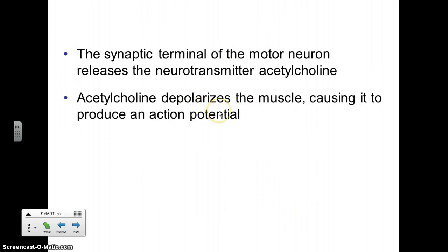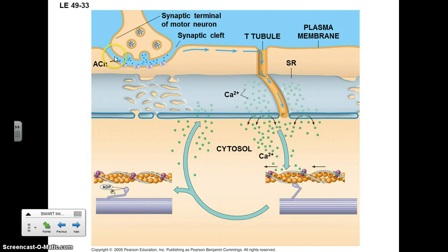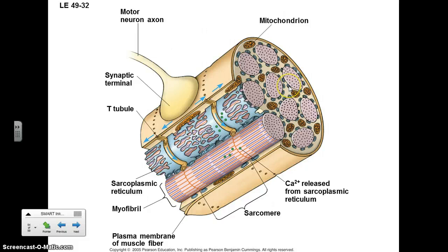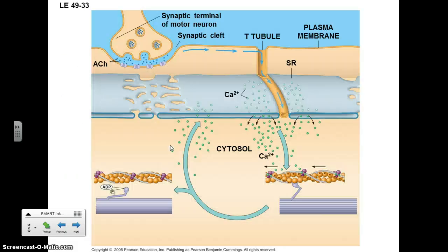The neurotransmitter acetylcholine is released into the junction between the nerve and the muscle cell, which causes a structure called the sarcoplasmic reticulum — which surrounds the sarcoplasm — to release a large amount of calcium ions. This causes depolarization and contraction of the muscle fiber.